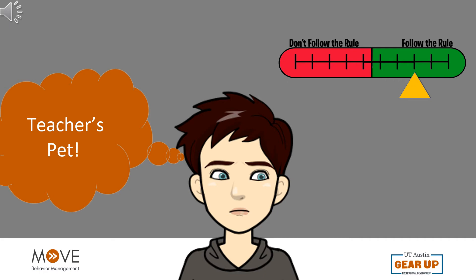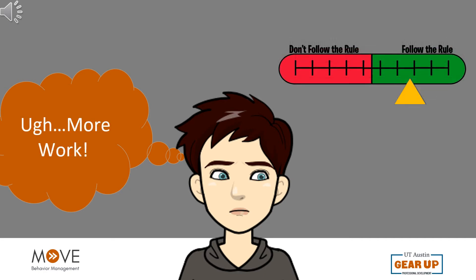Billy also considers the negative things that will happen if he does follow the rule. His parents will disapprove, and it will take more effort.